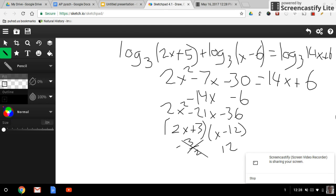In solving log base 3 of 2x plus 5 plus log base 3 of x minus 6 equals log base 3 of 14x plus 6, we recognize that it's an addition problem, so we can use multiplication. Since it's log base 3 and log base 3, we multiply 2x plus 5 times x minus 6, which gives us 2x squared minus 7x minus 30.